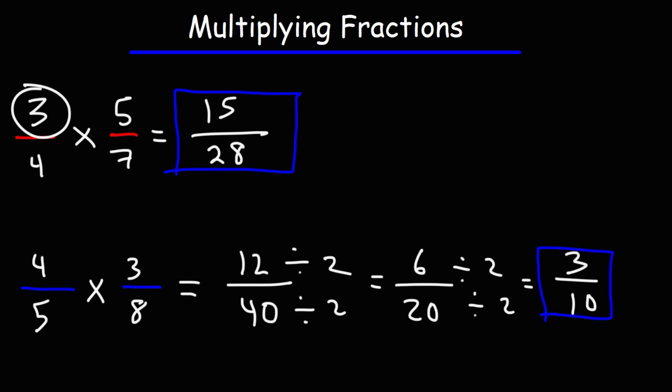By the way, for those of you who would like to reduce fractions faster, here's what you can do. Going back to 12 over 40, we could break down 12 into 4 and 3. 4 times 3 is 12. 40, we can rewrite that as 4 times 10. And notice that we can cancel a 4. Doing it this way will give us the same answer. The only difference is it's a lot faster.